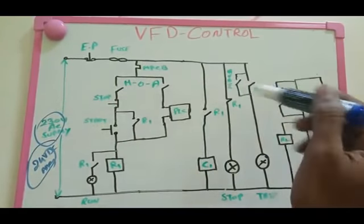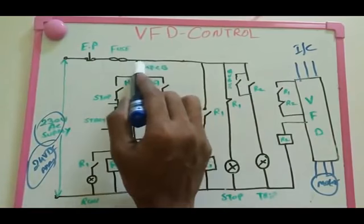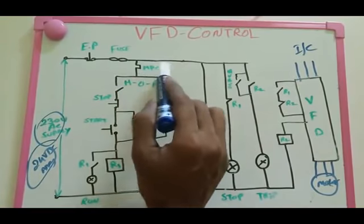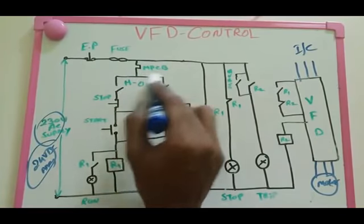After the VFD we are going to connect the motor. After this control diagram I will show you the power diagram also. This is the power diagram - this is the incoming, and then through the VFD we will take the output to the motor. After that, the MPCB - the motor protection circuit breaker - we take the supply through it.